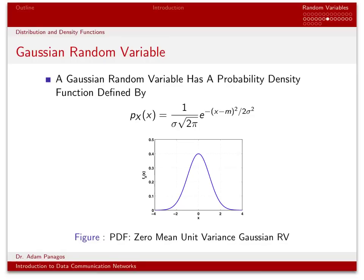A Gaussian random variable has a probability density function defined by this equation. The PDF for a random variable x when it's Gaussian is 1 over sigma times square root of 2π, times e to the minus (x minus m) squared divided by 2 sigma squared. This random variable has two parameters: m, which we call the mean, and sigma, which we call the standard deviation. Sigma squared is what we call the variance.